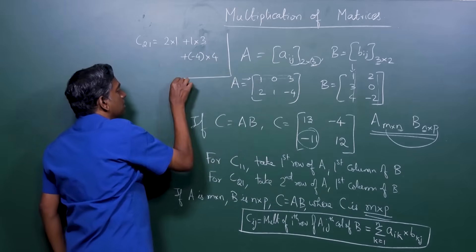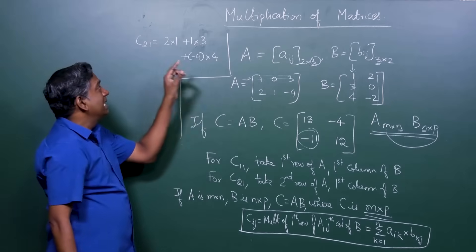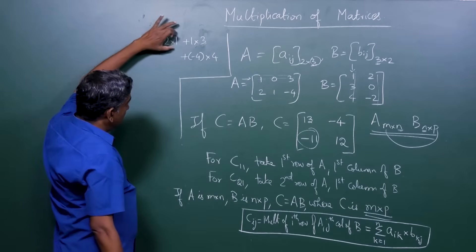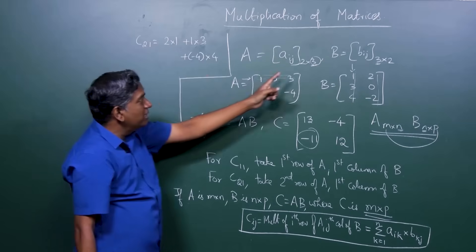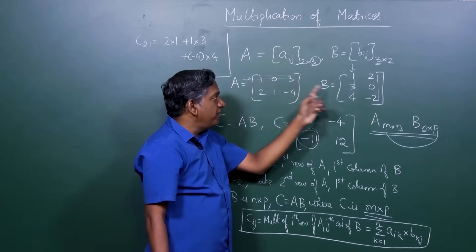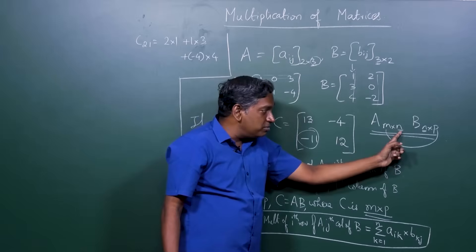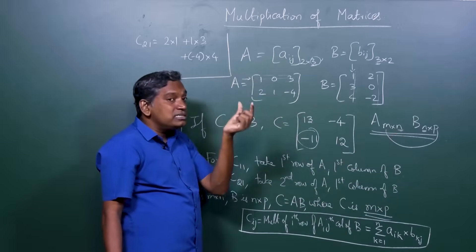So you see, this has product, product, product, 3 such products. Why 3? Because that is the number of columns you have here and the number of rows. So if you have n columns here, there will be n such products.